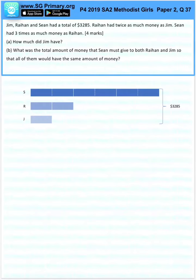Question 37. Jim, Raihan and Sean had a total of $3,285. Raihan had twice as much money as Jim. Sean had three times as much money as Raihan. How much did Jim have?